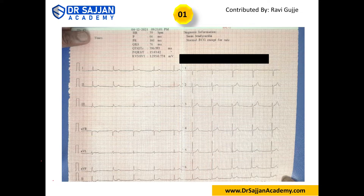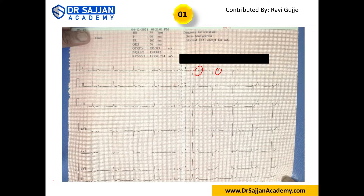Coming to T waves — T waves are all normal. Everything looks normal except for one lead, but as noted, it has to be in at least two or more consecutive leads. A single lead finding is not significant for a complete interpretation, so it is not significant.